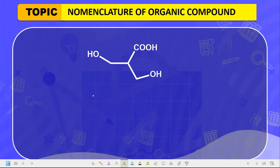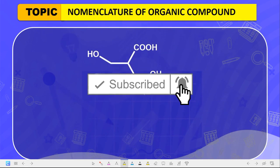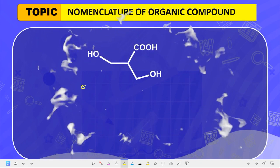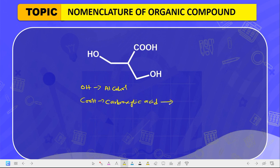Let's say you are given the following compound and asked to write the nomenclature of this compound. The first thing to do is to identify the functional group with the highest priority. In this compound, the two functional groups present are the OH functional group for the alcohol, and the COOH functional group for the carboxylic acid.